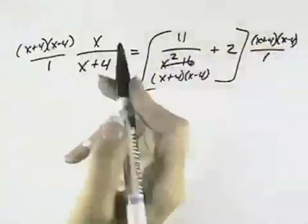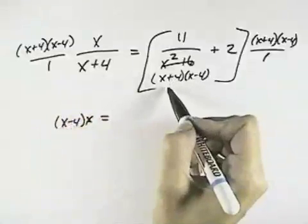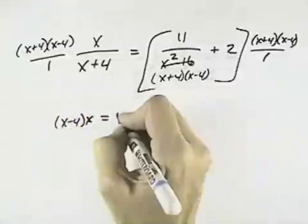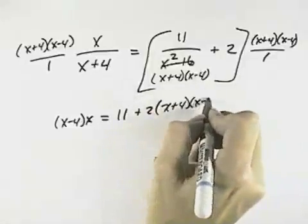On the left, the x plus 4 cancels, leaving x minus 4 times the x. On the right, in the first term, the x plus 4 and x minus 4 cancel, leaving 11. But then I have 2 times the x plus 4 times x minus 4.